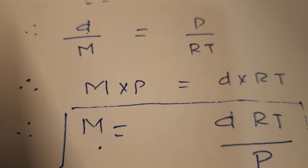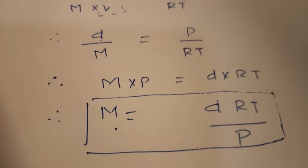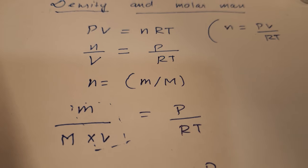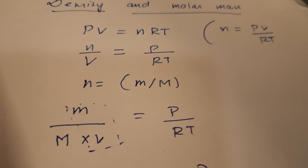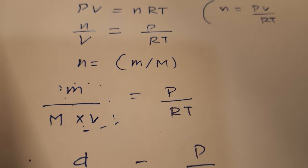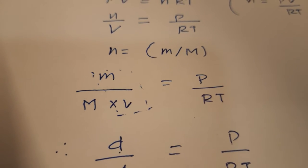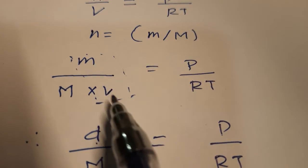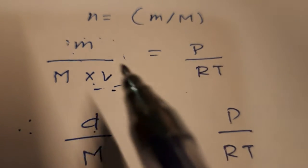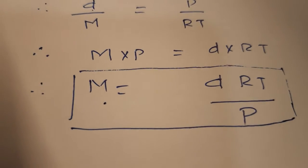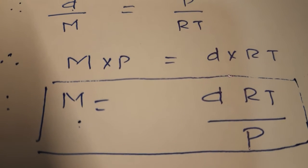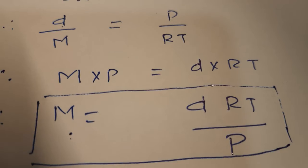After this we will read Dalton's Law of Partial Pressure. To recap: from PV = nRT, we derived n upon V equals P upon RT, and since n = m/M, substituting gives density upon M equals P upon RT, so molar mass M equals dRT upon P. Now we will read Dalton's Law of Partial Pressure.